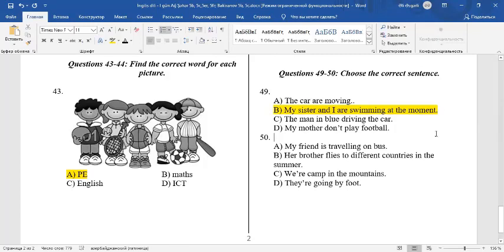C. The man in blue driving the car. It's incorrect. Here is missing. The man in blue is driving the car. D. My mother don't play football. We must say, my mother doesn't play football.